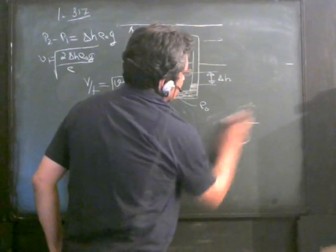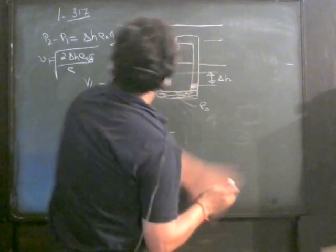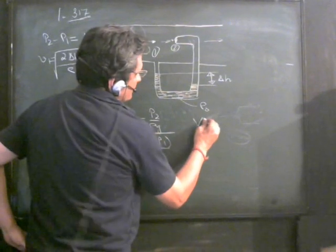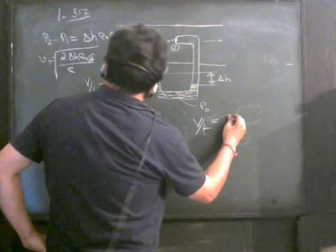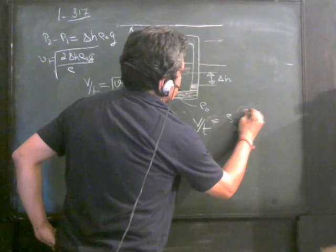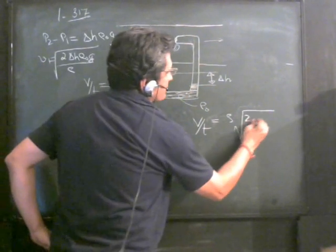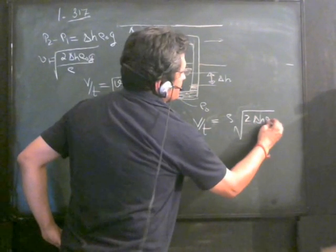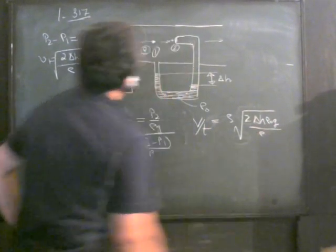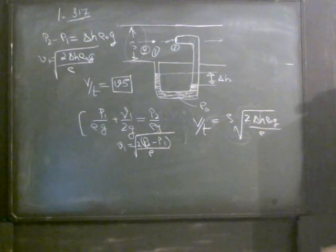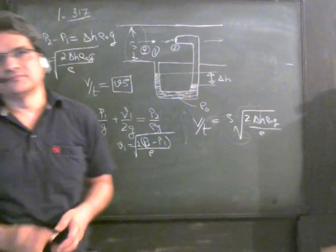The rate of flow of volume per unit time is Q = s√(2Δh·ρ₀·g/ρ). This is the answer for this problem. Thank you.